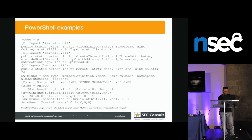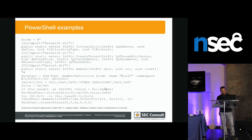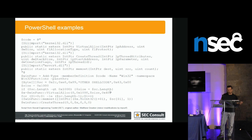Here's another example script I was using — from the Social Engineering Toolkit. It basically shows how to import different functions like VirtualAlloc or CreateThread, then copy your shellcode to the location with memset, and execute it.